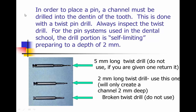In order to place a pin for retention, we must drill a channel into the dentin of the tooth using a twist drill. Always inspect the twist drill to make sure it's in good working order. Here we see three examples of twist drills: the top one is 5 millimeters long — don't use that, it's too long and makes placement much more difficult. Typically we use the 2-millimeter long twist drills in the middle; they create a channel about 2 millimeters deep to allow us to put a self-threading pin into that channel. You may also be given a twist drill with the drill tip broken off — throw that one away.